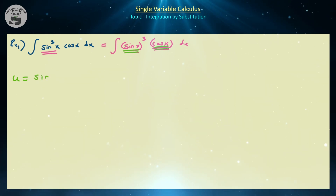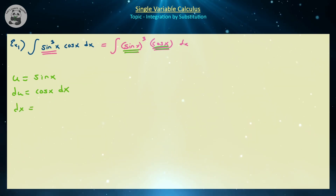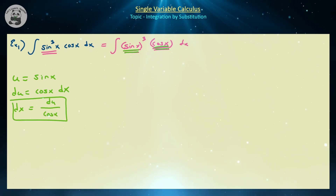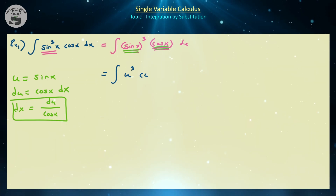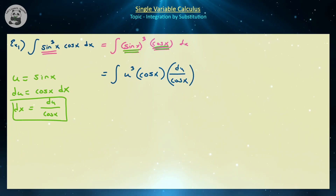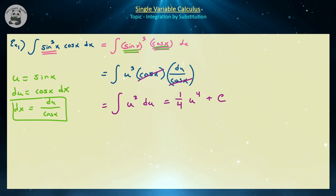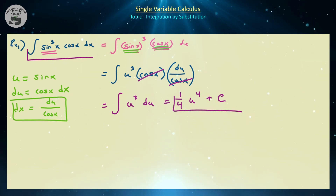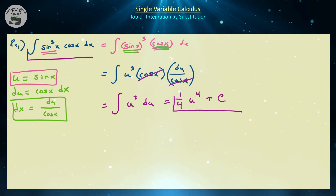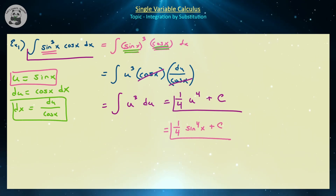Let u equal sine of x. Then du equals cosine of x dx, and dx equals du over cosine of x. Substituting: the integral of u³ times cosine of x times du over cosine of x — the cosines cancel, leaving the integral of u³ du, which equals one-fourth u⁴ plus c by the power rule. Switching back, u is sine of x, so the final answer is one-fourth sine⁴(x) plus c.